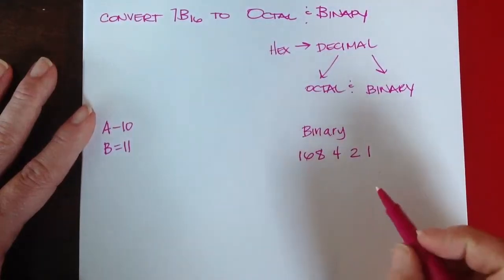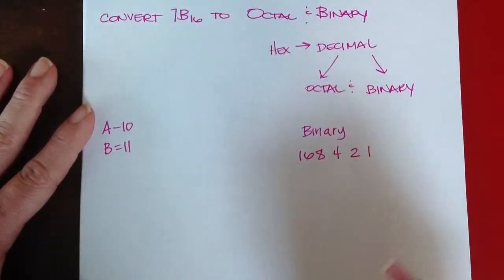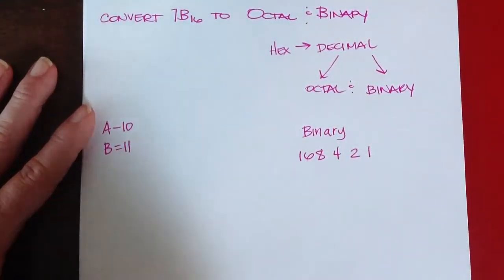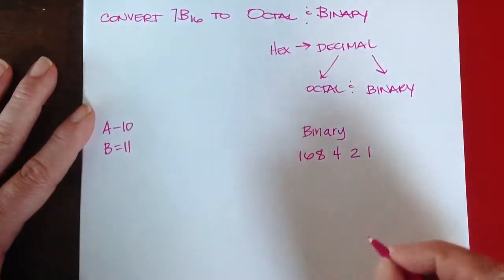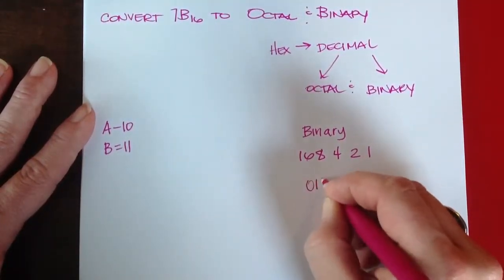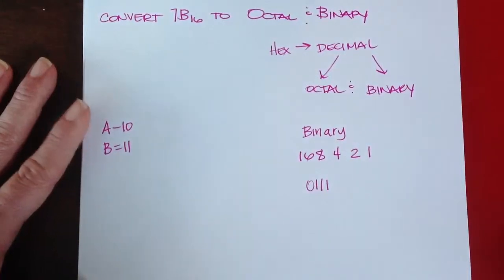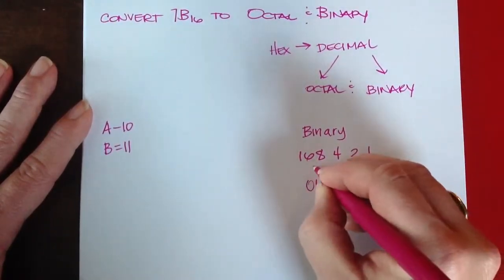So if I wanted to make the number 7, I have to write it as a four-digit number out of base 16. So it would be 0, 1, 1, 1. That's the number 7, so I write that for the first place.